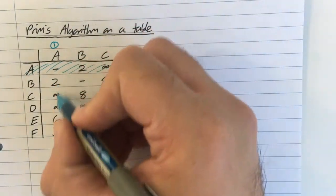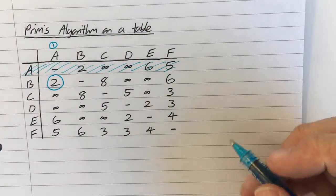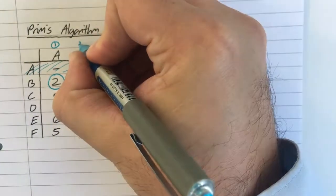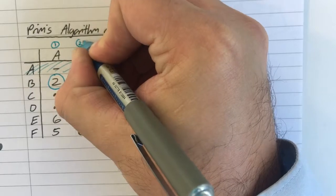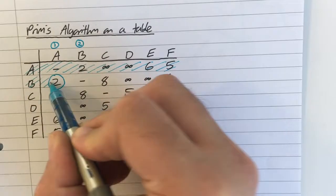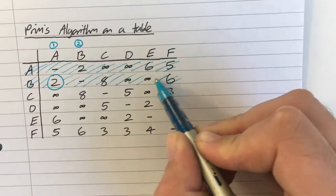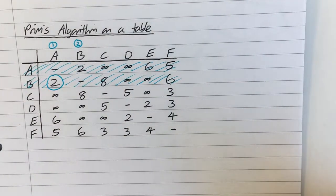So, now that I've found that, I circle it to indicate that I've chosen that arc. I'll put a number 2 above column B to indicate it is now part of my tree, and I now cross out row B to stop me going back to node B later on.